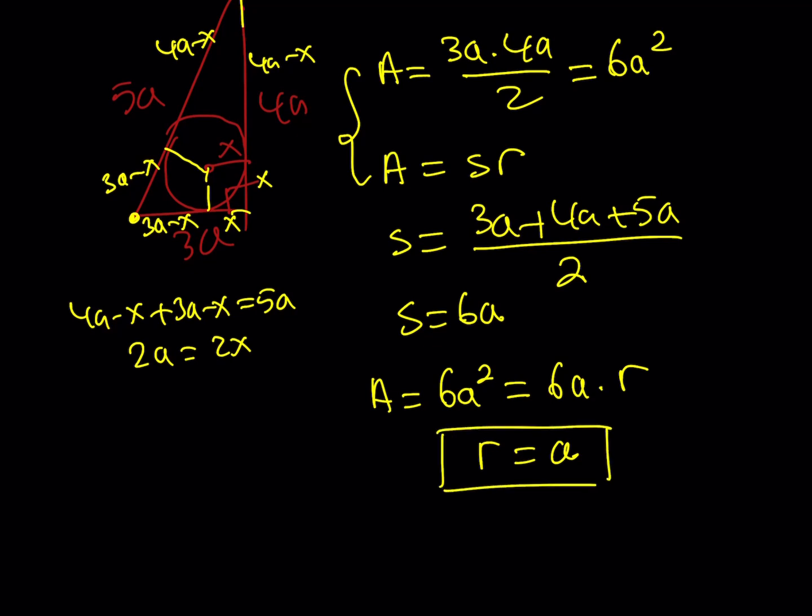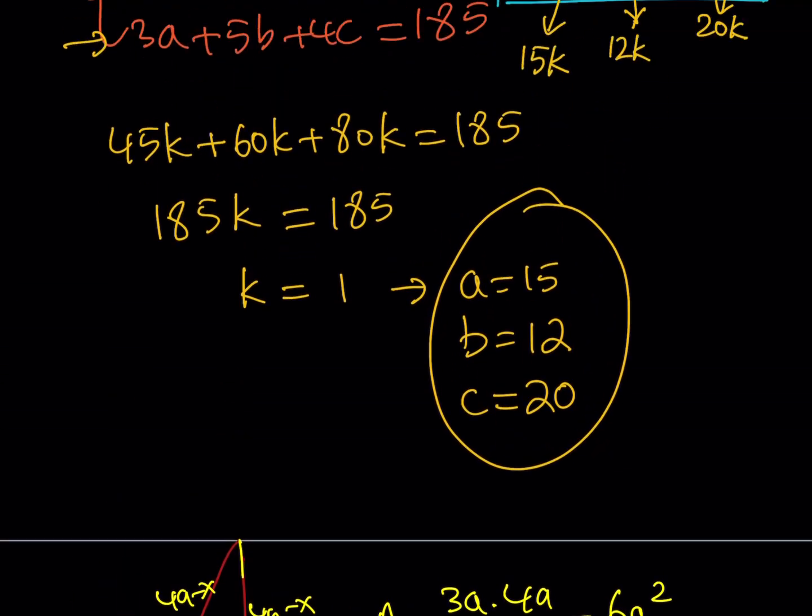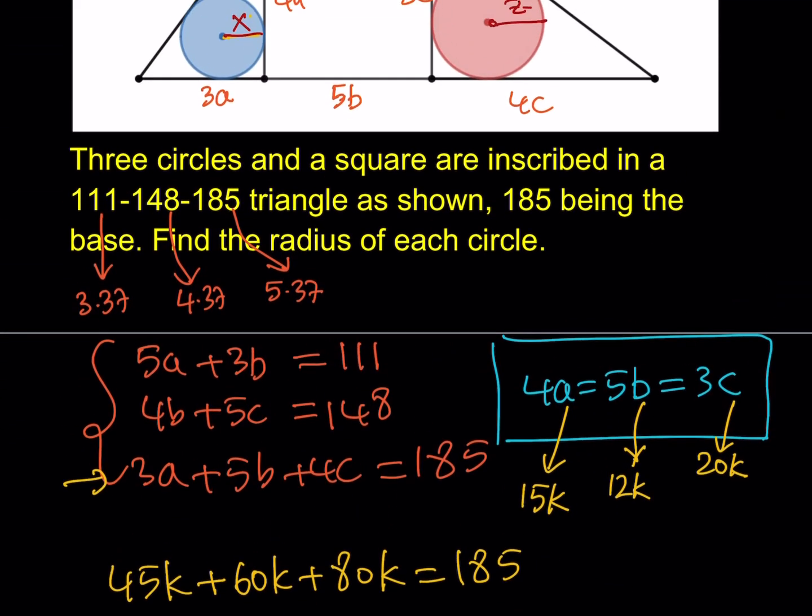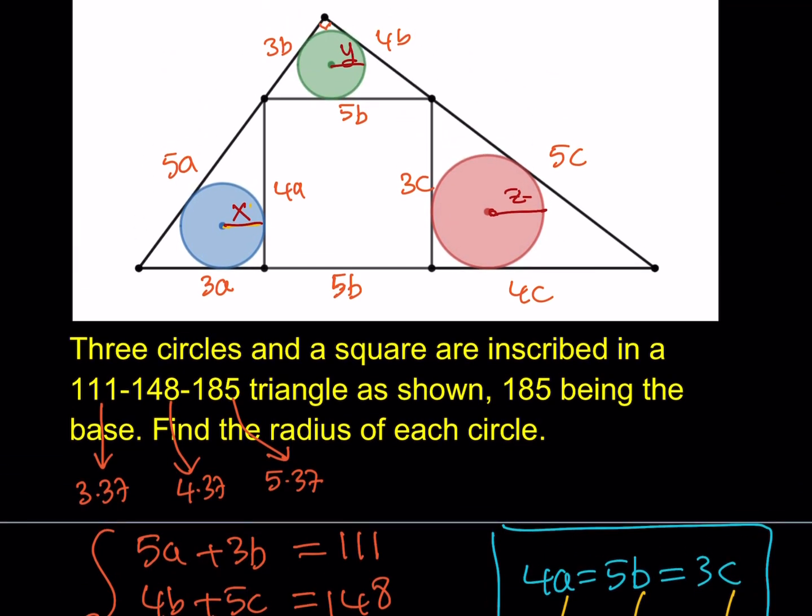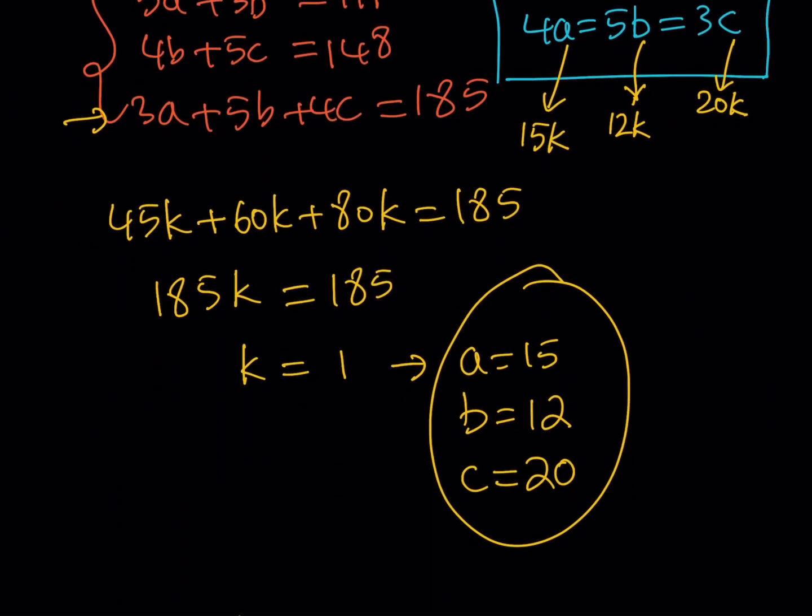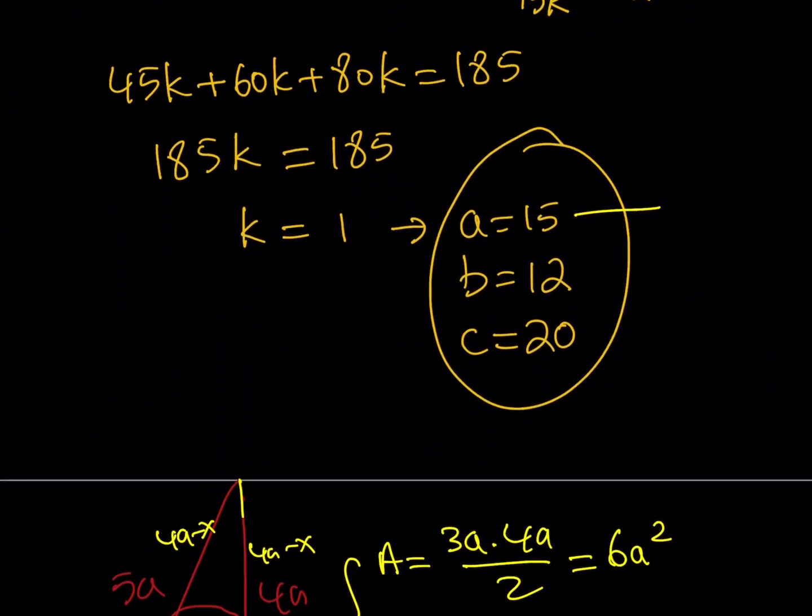So, you can also verify it differently, but I just wanted to use the area formula because it's kind of cool. Anyway, so, the radii for each one of these is going to be equal to, R is going to be A, X is going to be A, Y is going to be B, and Z is going to be C. So, these values are actually the values of the radii.